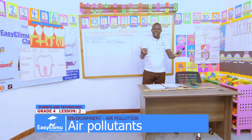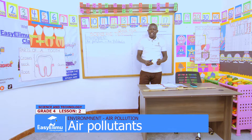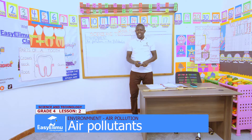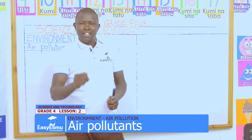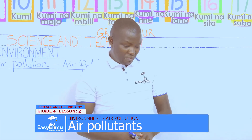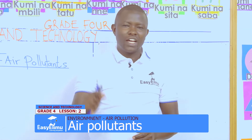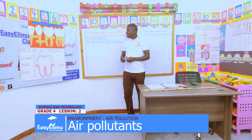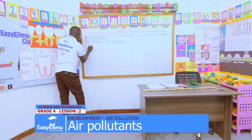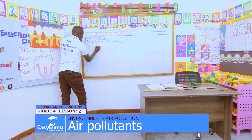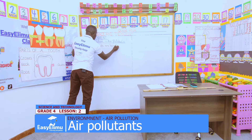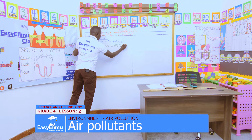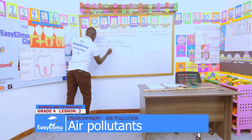Victoria, what have you discussed with your partner? Some of these harmful substances we said are like smoke. Who else? Tom says dust. So these harmful substances, we call them air pollutants because they are polluting the air. In short, air pollutants are harmful substances which pollute the air.